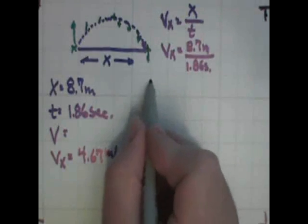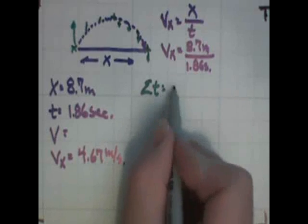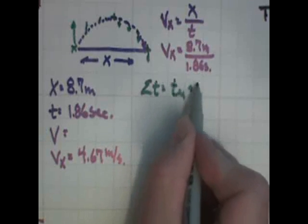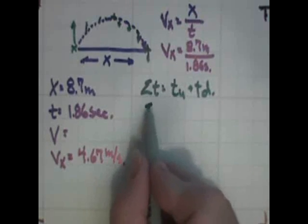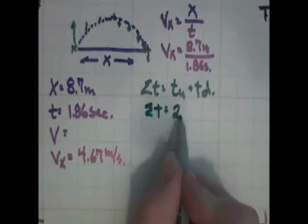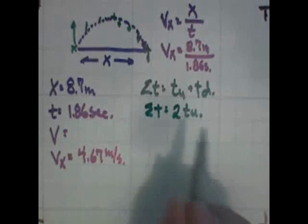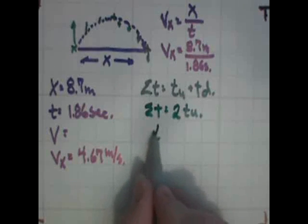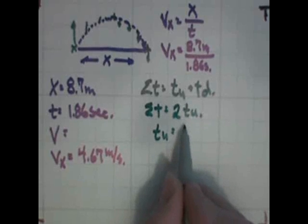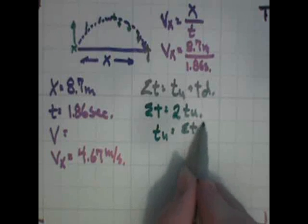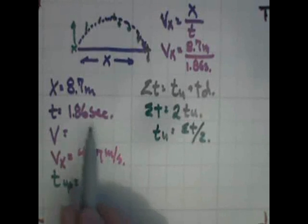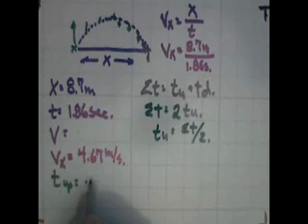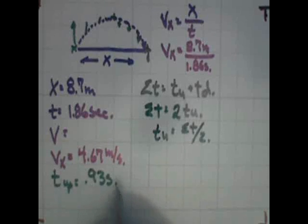And the total time in the air is equal to the time up plus the time down. And as it turns out, those two are equal to each other. So we can say that the total time in the air is equal to two times the time up, which means that the time it took to go up was equal to the total time in the air divided by two. So the time it took to go up is equal to half of 1.86, which would be 0.93 seconds.